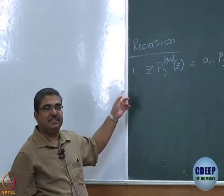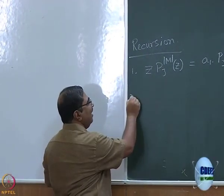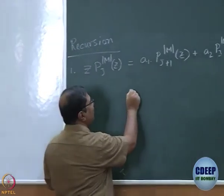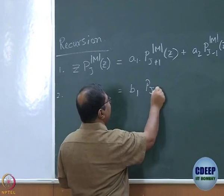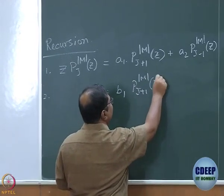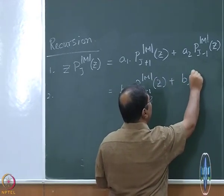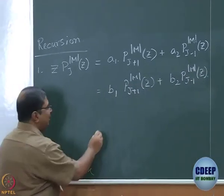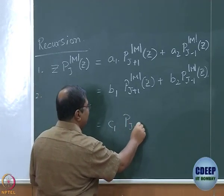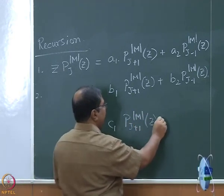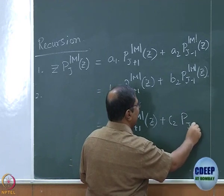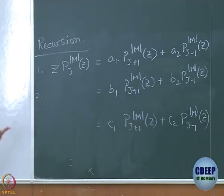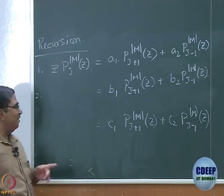Are you aware of these recursion relations? What is the second one then? I'll write the right hand side. B1 P_{J-1}^{|M|}(Z) plus B2 P_{J+1}^{|M|}(Z). And in fact there is a third one. C1 P_{J-1}^{|M|}(Z) plus C2 P_{J+1}^{|M|}(Z). So right hand side is essentially the same, linear sum of the polynomial before, polynomial after with no change in M.